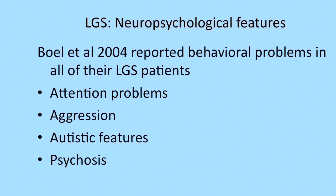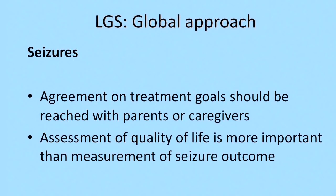Behavioral problems in Lennox-Gastaut syndrome include attention problems, aggression, autistic features, and less frequently psychosis. When approaching a child with this syndrome, the treatment must be considered globally. The main thing is to reach an agreement on treatment between caregivers, family, and the treating physician. You have to focus on quality of life as your criteria for successful treatment more than seizure control, because sometimes the quality of life is more impaired by the treatments than by the seizures themselves.